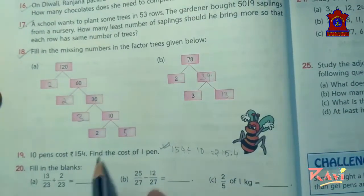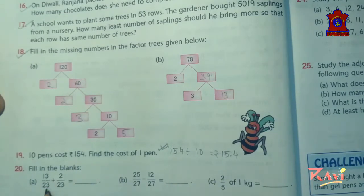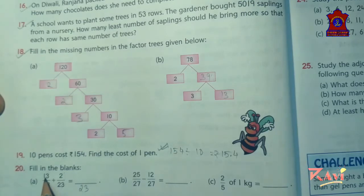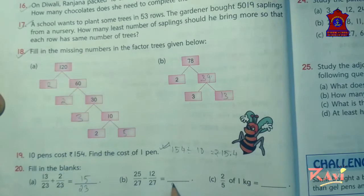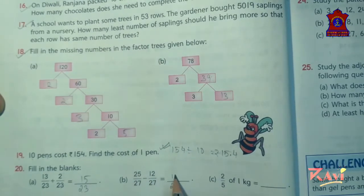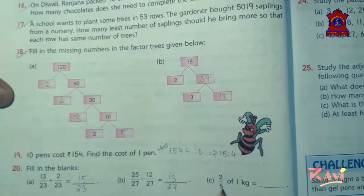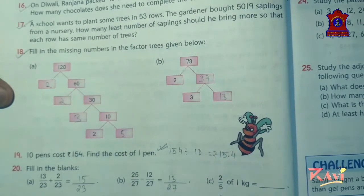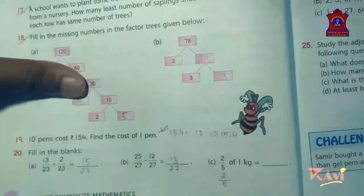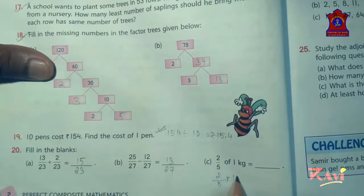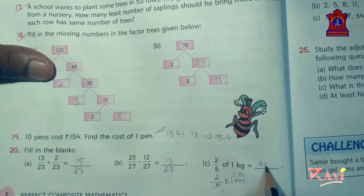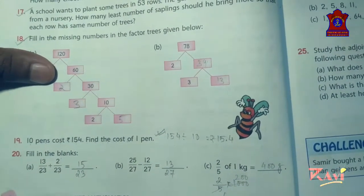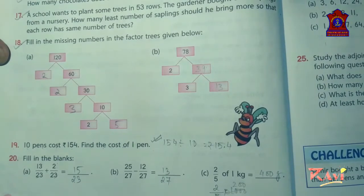Now let's move to question number 20. 13 upon 23 plus 2 upon 23. The denominators are same, so take a common 23. Now 13 plus 2 is 15. Similarly question b, both denominators are same, so take a common 27. Now 25 minus 12 is 13. Now 2 upon 5 of 1 kg. We can do 2 upon 5 into 1 kg equals to 1000. So we get 400 gram. The students who have not understood this we can do in the online class.